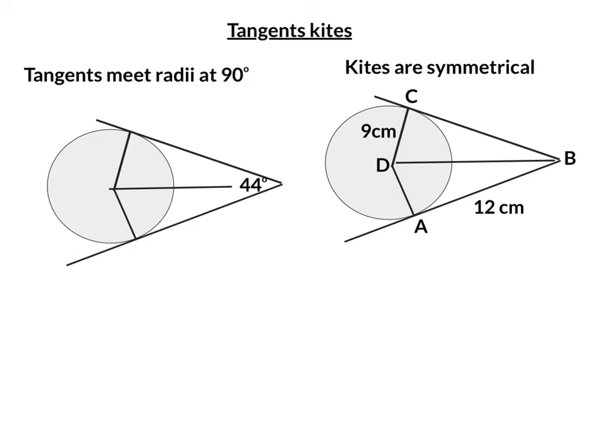Well that means that we've got a right angle here and a right angle here, as it's symmetrical. 44 degrees is this whole part here, so if we split that into two then each half here is going to be 22 degrees. So that's 22 degrees and that's 22 degrees.